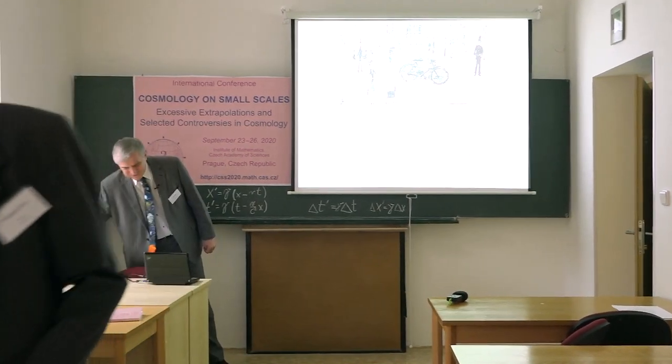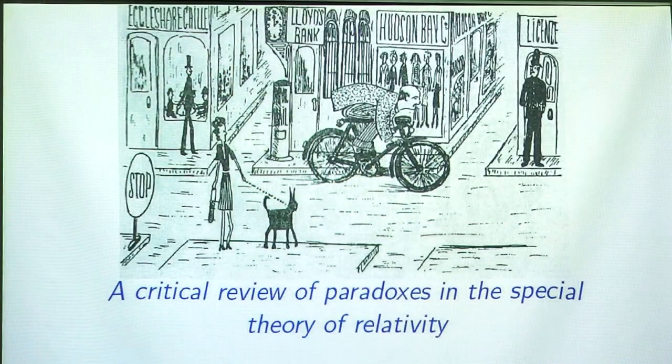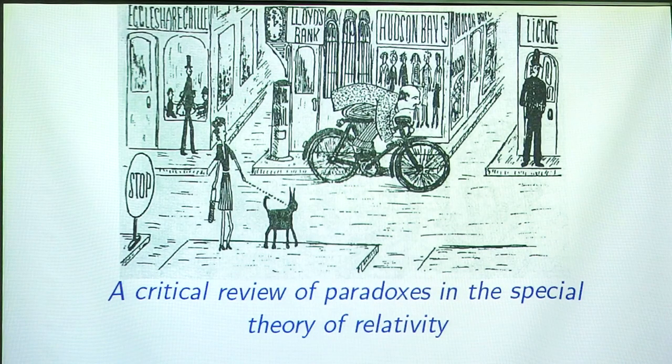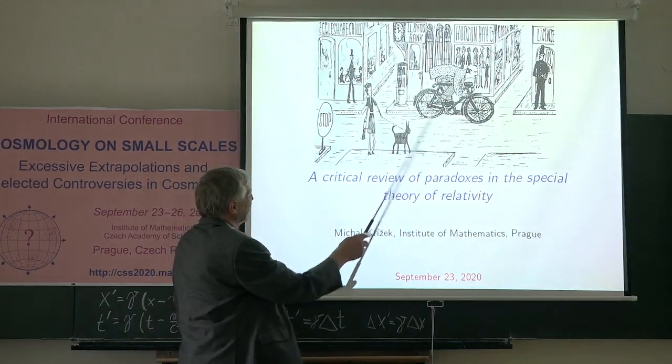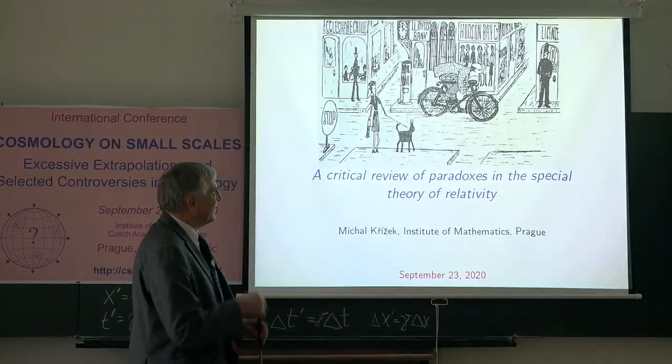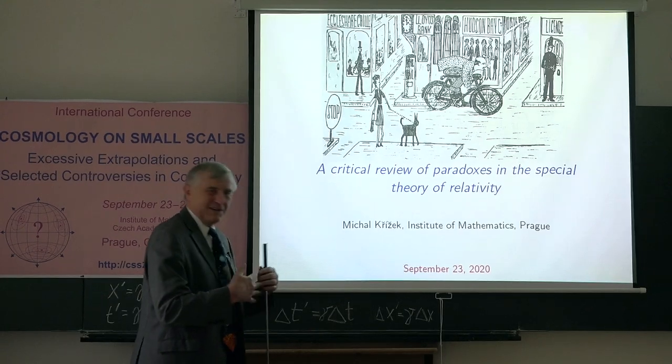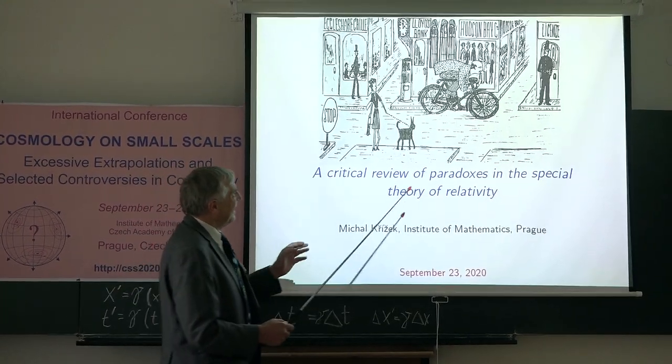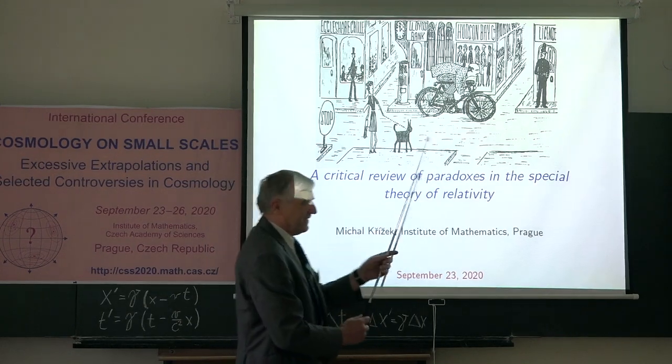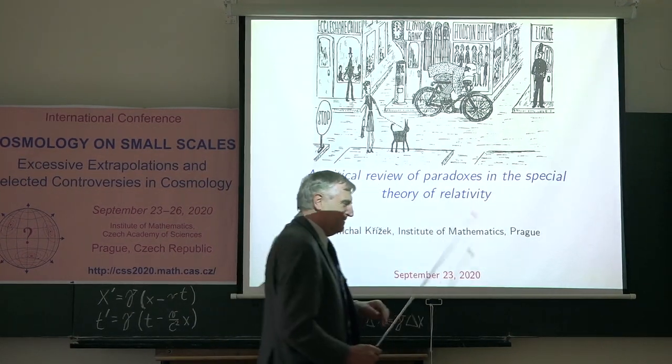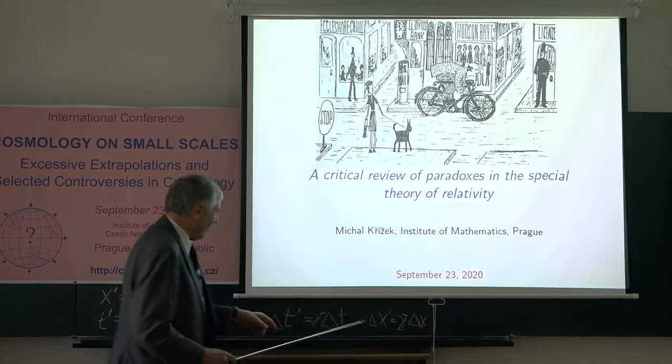I would like to start with this picture from the famous Gamow book. Here is some man cycling at speed, maybe 80% of light. According to Gamow, he should see everything according to this formula,